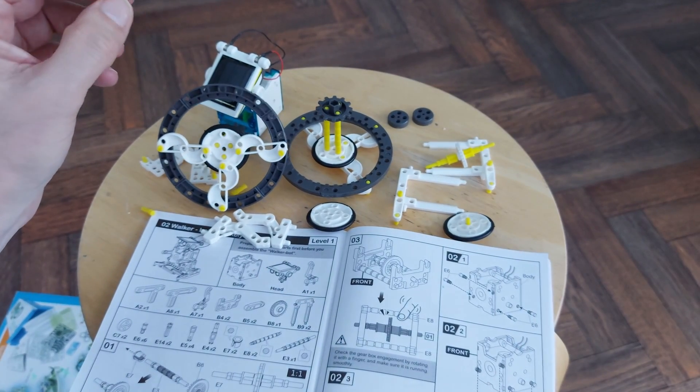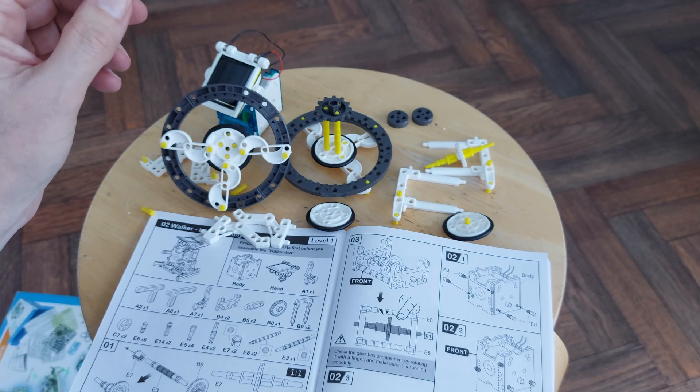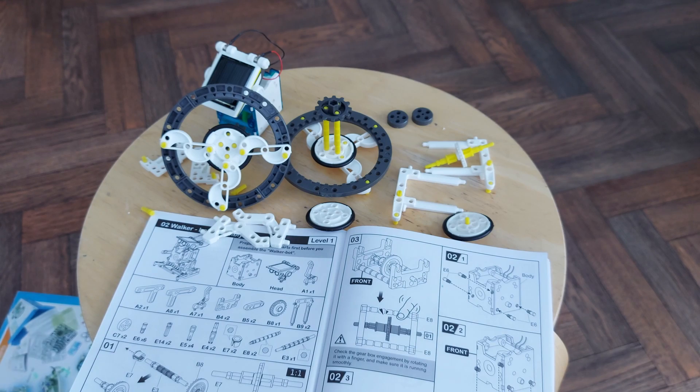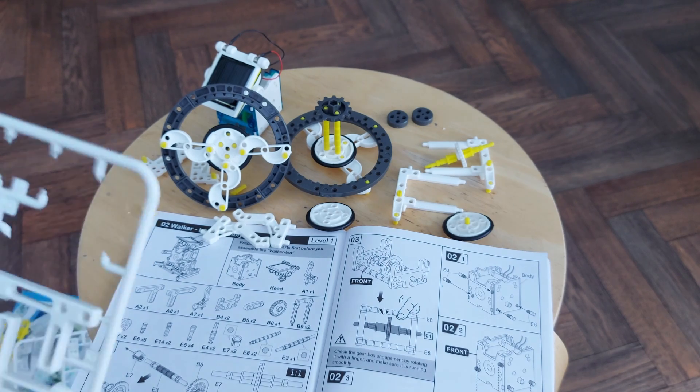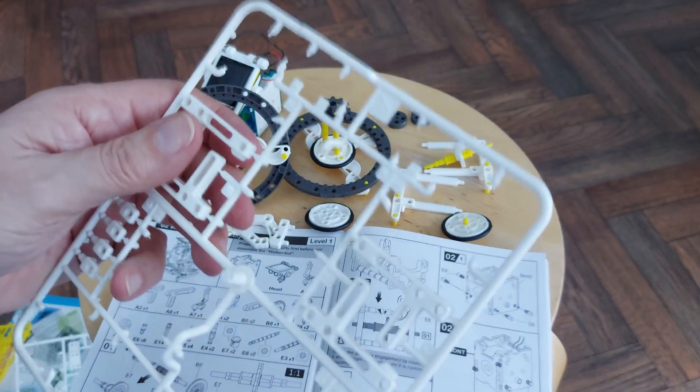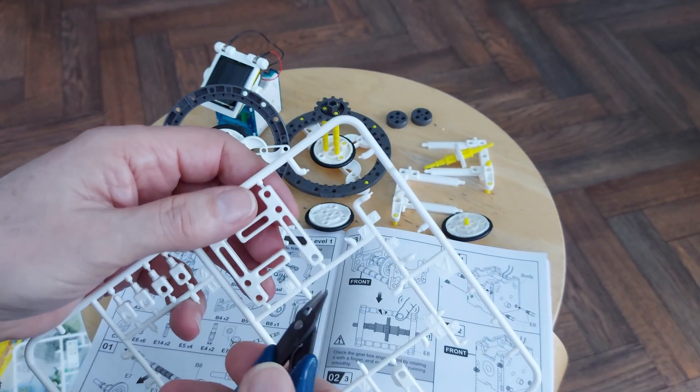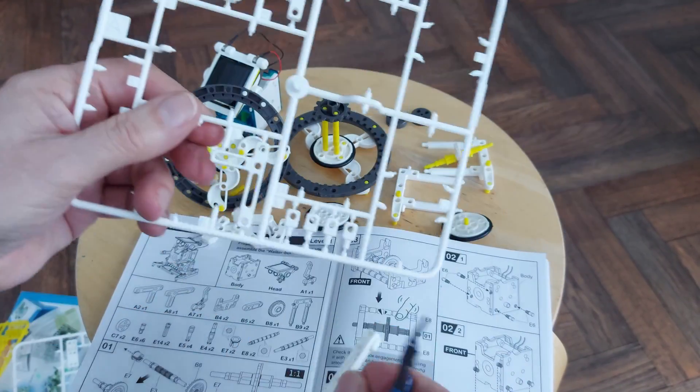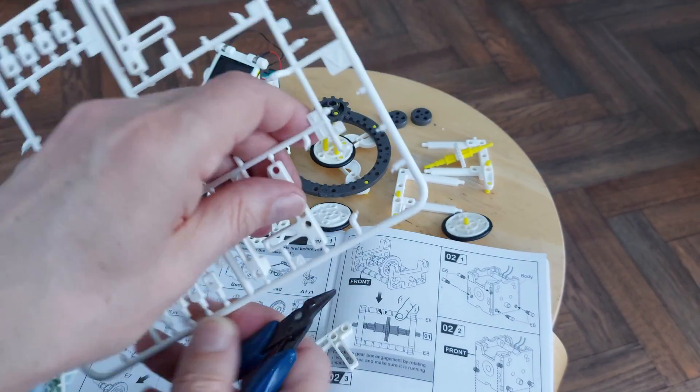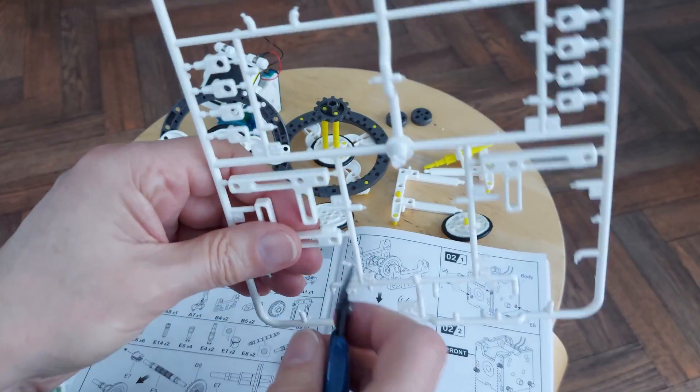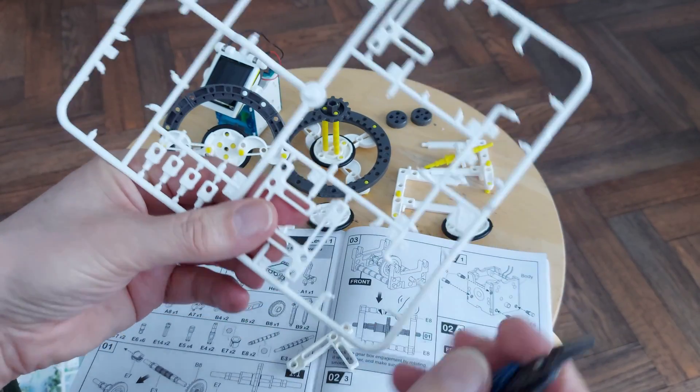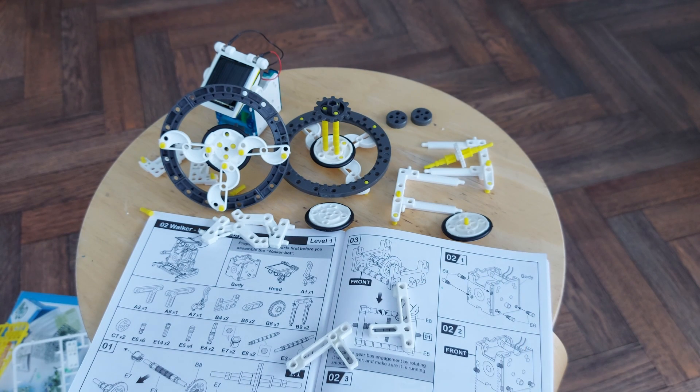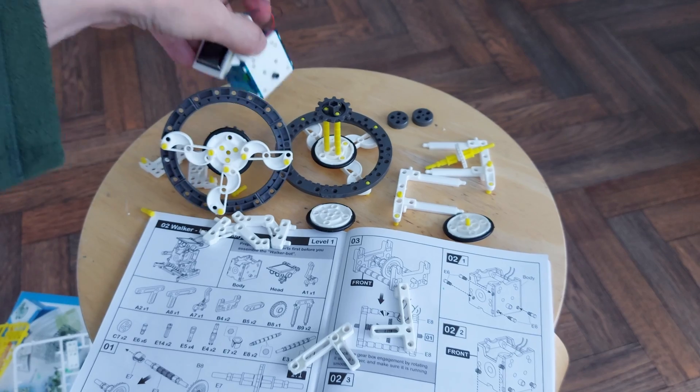We need those bits. And we need A2 and A8, which is, that one's an A8. And that one is an A2. Basically they're mirror images of each other. So, this fellow.